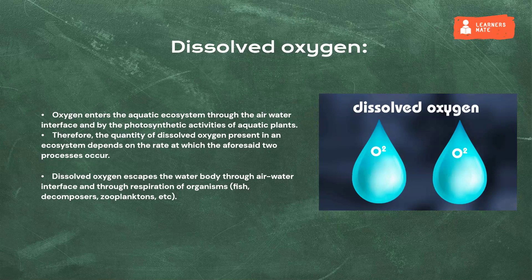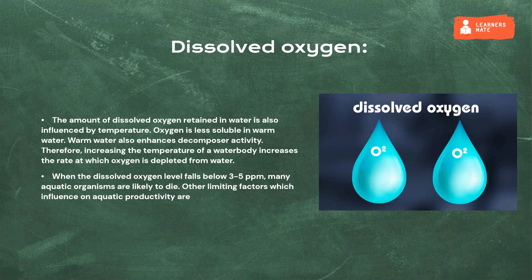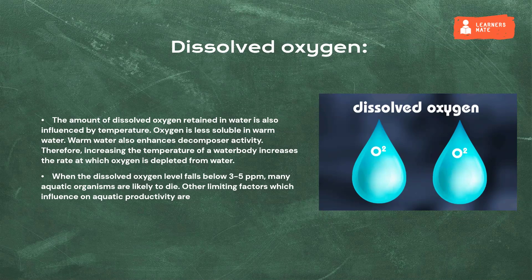The quantity of dissolved oxygen present in an ecosystem depends on the rate at which these two processes occur. Dissolved oxygen escapes the water body through the air-water interface and through respiration of organisms such as fish, decomposers, and zooplanktons. The amount of dissolved oxygen retained in water is also influenced by temperature — oxygen is less soluble in warm water. Warm water also enhances decomposer activity, increasing the rate at which oxygen is depleted. When the dissolved oxygen level falls below 3 to 5 ppm, many aquatic organisms are likely to die.